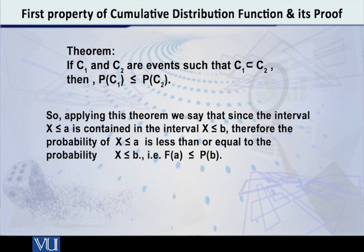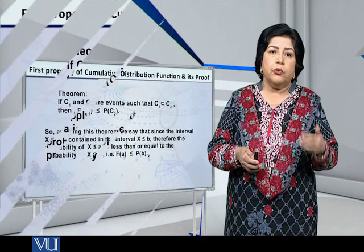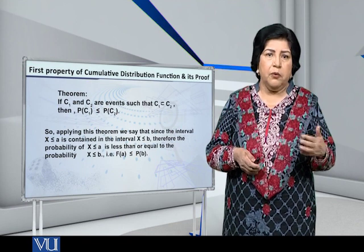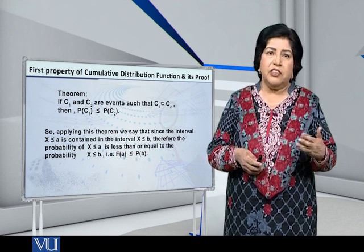Since the interval X less than or equal to A is contained in the interval X less than or equal to B, therefore the probability of X ≤ A is less than or equal to the probability X ≤ B, i.e., F(a) ≤ F(b). So this is the first and foremost property of the cumulative distribution function.